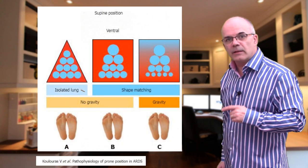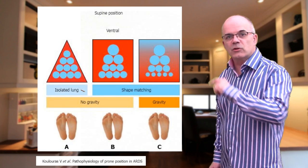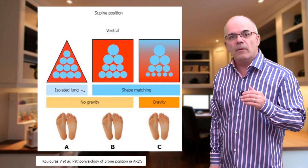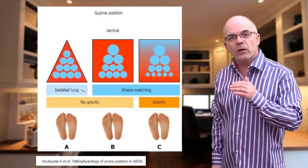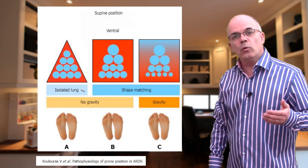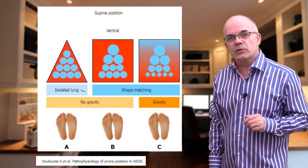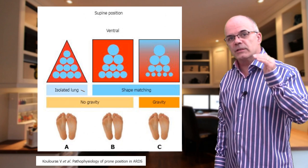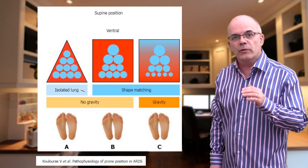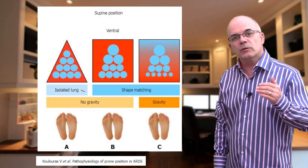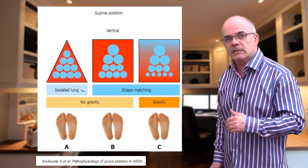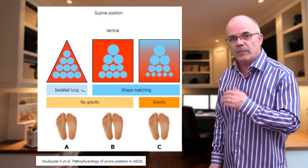When the patient is supine, the apex of the triangle is at the front of the chest — the ventral side — and the base of the triangle is at the back, or the dorsal side. The chest wall, however, has a cylindrical shape. Because of this difference, the lung must expand its upper regions more than the lower ones, which leads to greater expansion of the non-dependent alveoli and a lesser expansion of the dependent ones.